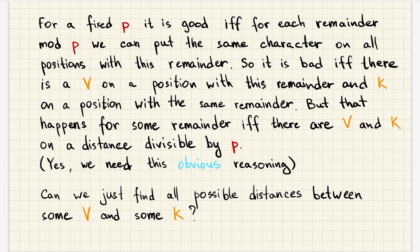But that can happen for any remainder with a given modulo p if and only if there are v and k on positions with distance that is divisible by p. This might seem obvious, but we need the if-and-only-if part.